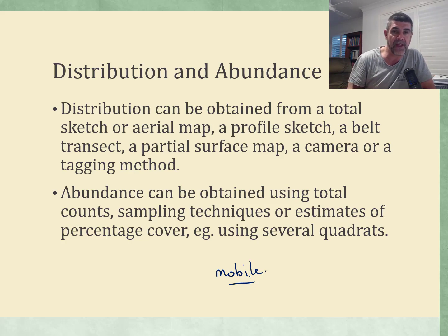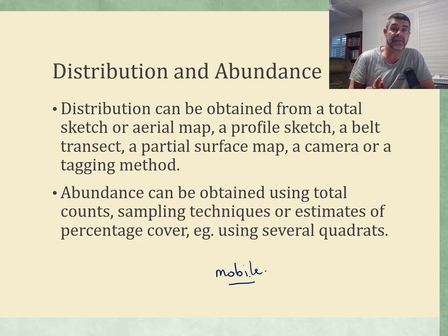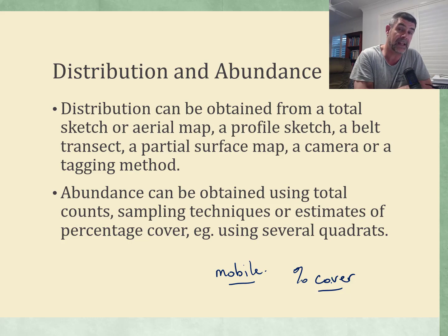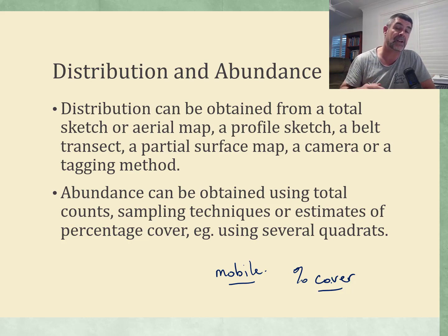Animals won't stay still while you're trying to count them, which makes them more difficult to count. On the other hand, while plants don't move around, sometimes counting them is still difficult — how do you count the number of grasses? So we need to use slightly different methods. Things like percentage cover may be used to get a sense of the overall abundance of a particular type of plant in an ecosystem.